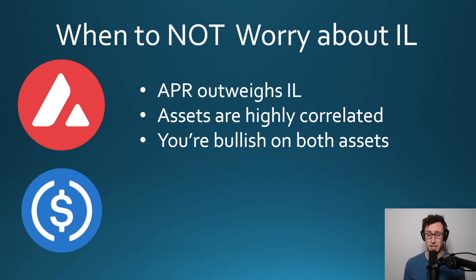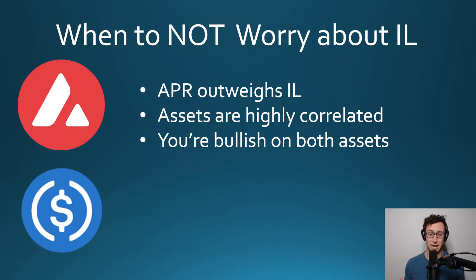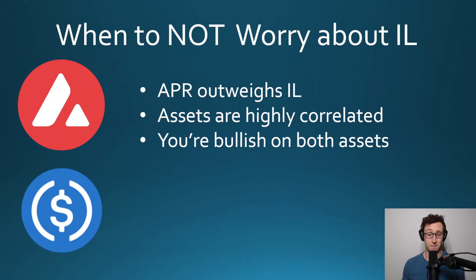That's basically when not to worry about it. In most cases we'd look at with farms with high APR, the APR would outweigh impermanent loss — however there are some exceptions, particularly if you're looking at micro-cap coins. Hopefully that helped clarify what exactly impermanent loss is and when to worry about it. If you have any other questions, please drop them below in the comments. If you enjoyed this video, please give it a thumbs up, subscribe to my channel, and follow me on Twitter. Till next time, this is DynamoDeFi.